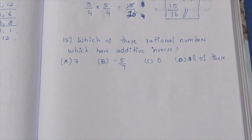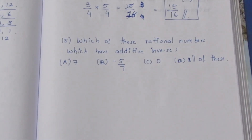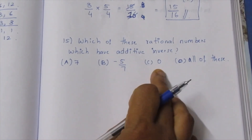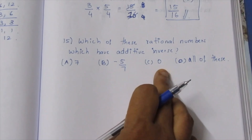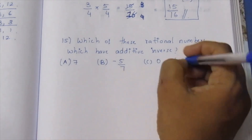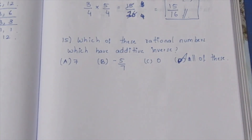Next, the 15th sum: which of the following numbers has an additive inverse? The additive inverse of all numbers — we can see that even 0 has an additive inverse. If you add 0, the result is 0. So all numbers have an additive inverse. The correct answer is 'all of these.' Thank you.